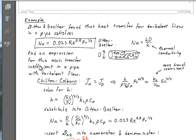Our task is to find an expression for the mass transfer coefficient in a similar pipe with similarly turbulent flow. The Chilton-Colburn analogy says the J factors for these two processes should be equal. Whatever those J factors are, they should be a relationship between H over heat capacity times velocity times this Prandtl number to the two-thirds.